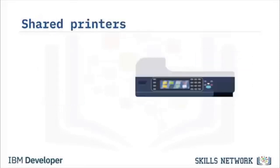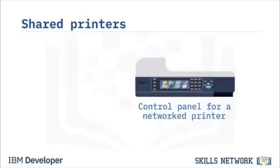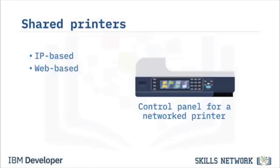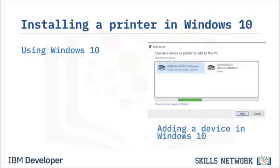A networked printer connects to a network via Ethernet or Wi-Fi and can be accessed by multiple devices simultaneously. A local printer is cabled directly to the device requiring it. An IP-based printer is part of an IP network, often used with Unix computers. A web-based printer can receive documents through a network and via the Internet rather than a direct connection.